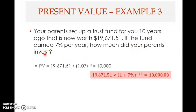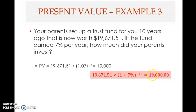Using the formula: $19,671.51 multiplied by (1 + 7%) raised to the power of negative 10. This gives you $10,000. So if you invest $10,000 now at 7% per year for 10 years, you will get $19,671.51. The unknown present value — the amount your parents originally invested — is $10,000.